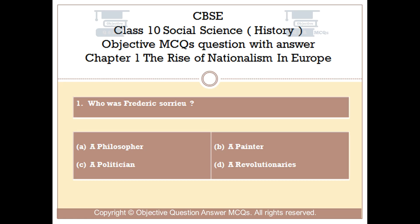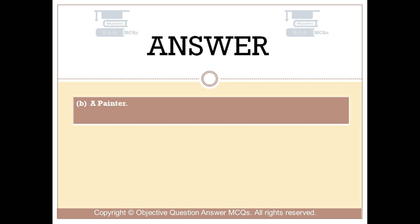Question number 1. Who was Frederick Saru? Option A: a philosopher. Option B: a painter. Option C: a politician. Option D: a revolutionary. The right answer is Option B — a painter.